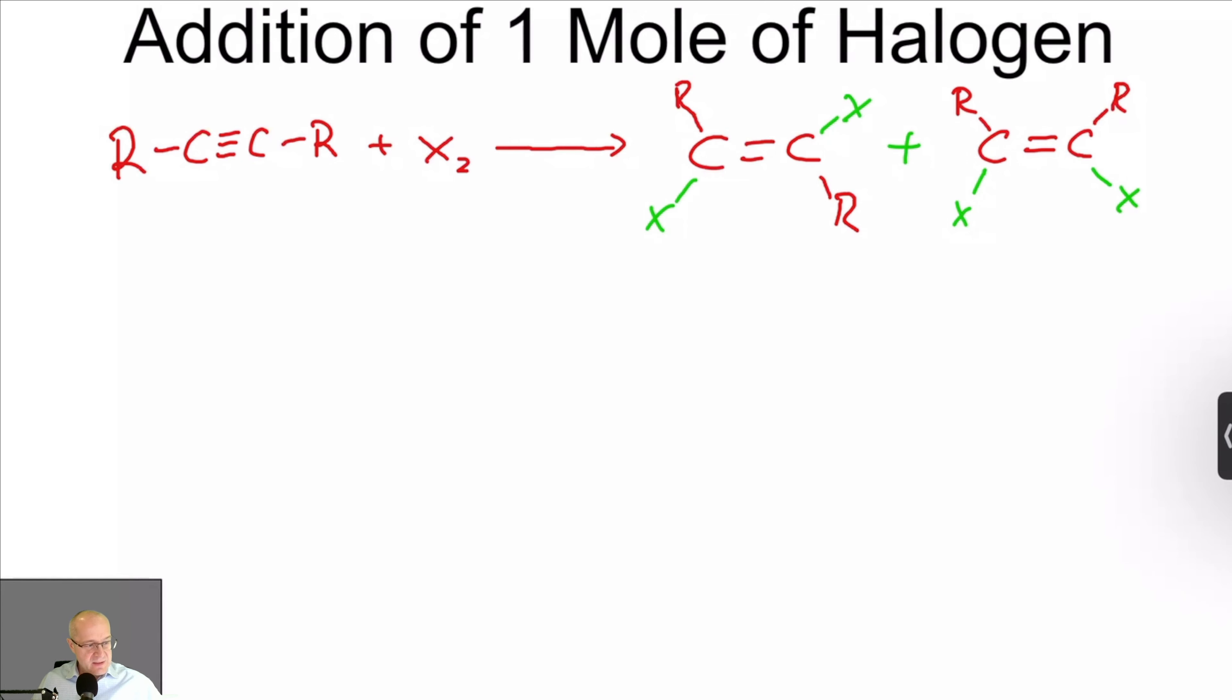And there you go. So that is the product of this reaction. And also, these give you a mixture of cis and trans, but they also are very difficult to stop. So you'll actually get a mixture of not only the dihalides, but the tetrahalides, where they add another mole across the triple bond.